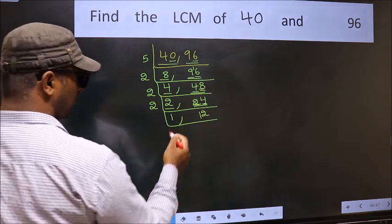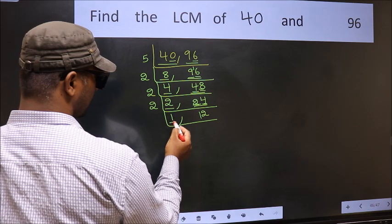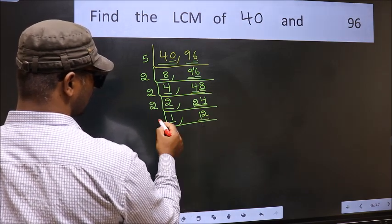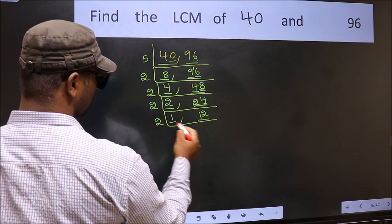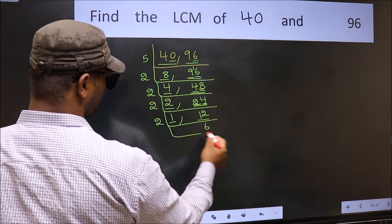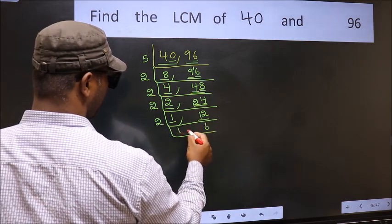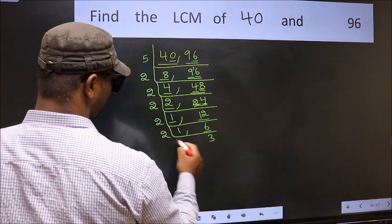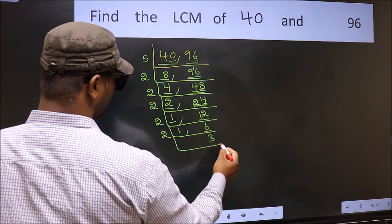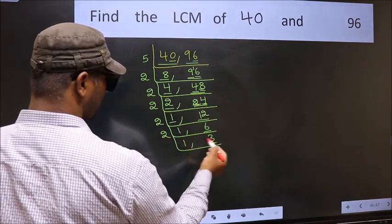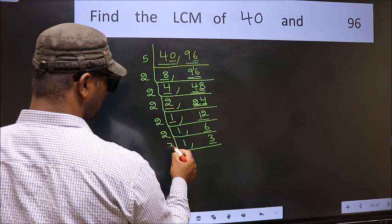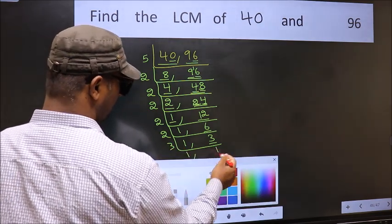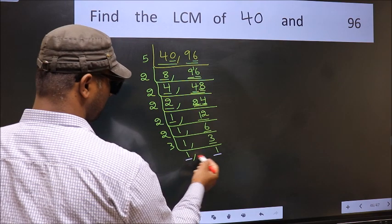Now we got 1 here. So focus on the other number, 12. 12 is 2 times 6, and 2 times 6 is 12. Now we have 6; 6 is 2 times 3. Now we have 3; 3 is a prime number, so 3 times 1 is 3. So we got 1 in both places.